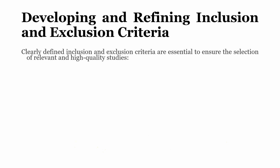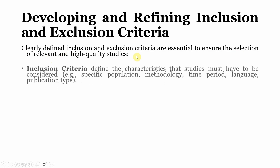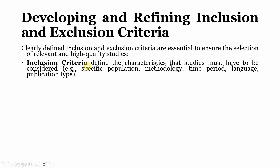Developing and refining inclusion and exclusion criteria: clearly defined criteria are essential to ensure the selection of relevant and high-quality studies. Inclusion criteria define the characteristics that studies must have to be considered — for example, a focus on a specific population or a specific methodology.